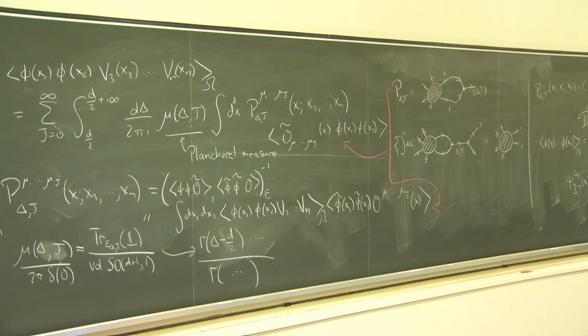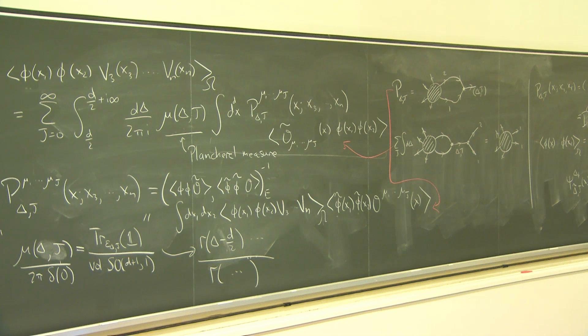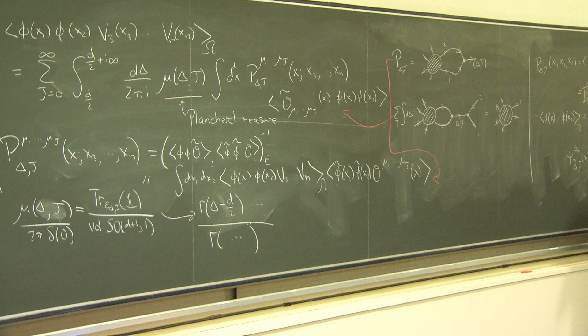The conformal block was determined by the fact that it was an eigenfunction of the Casimir equation with a particular boundary condition. In this case, you can figure out what this thing is by studying what happens when x1 approaches x2 in this integral. When you do that, you find that this is actually a sum of two conformal blocks with some coefficients k — there's a conformal block for O, and then the conformal block associated with the shadow representation.